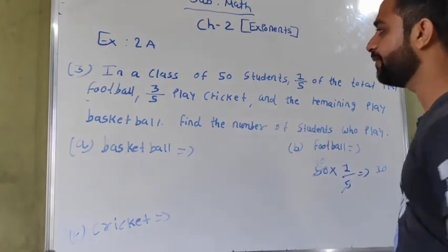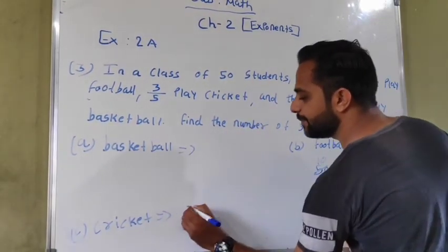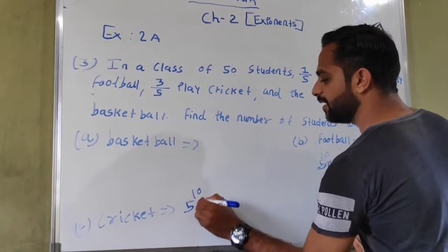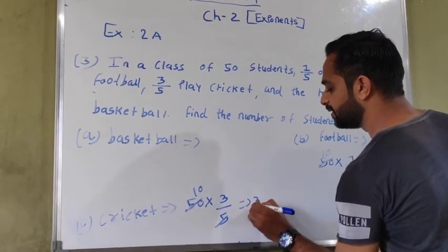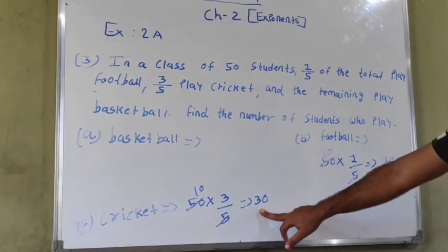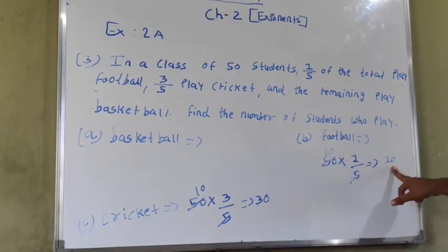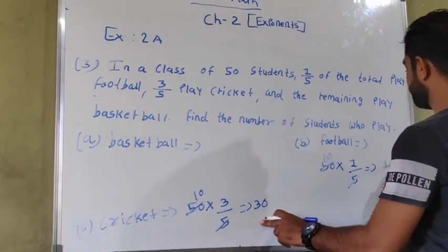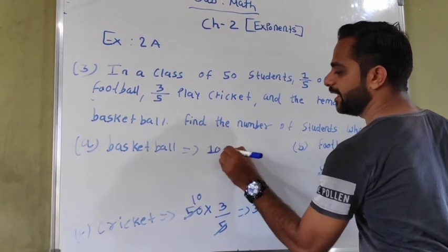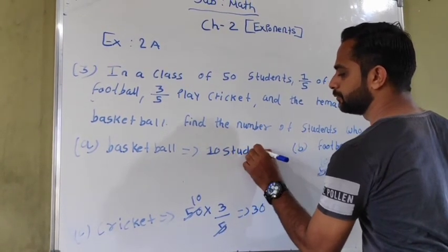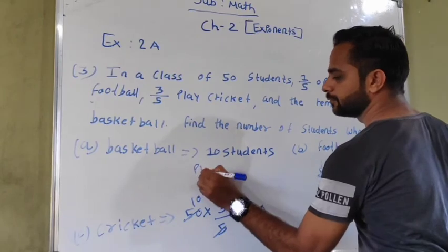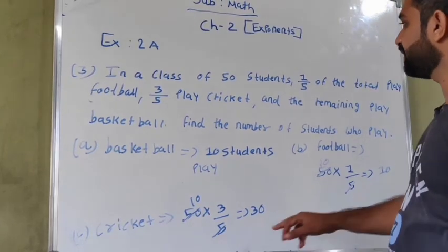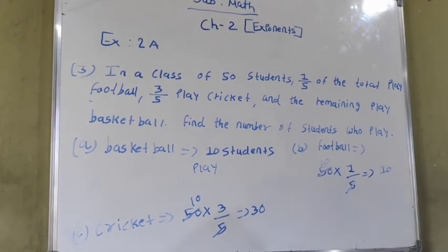Football is 1 upon 5, cricket is 3 upon 5. So 50 multiplied by 3 upon 5. 5 goes into 50 ten times, 10 times 3 is 30. So 30 students play cricket. 10 students football, 30 students cricket, so 30 plus 10 is 40. And 10 students play basketball.